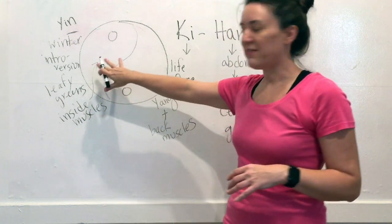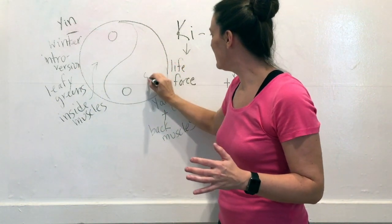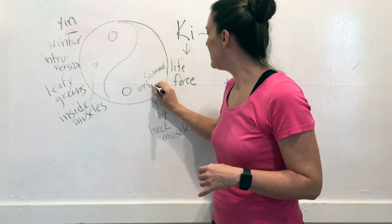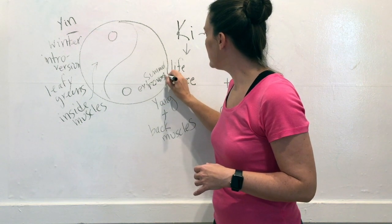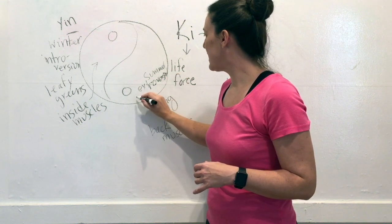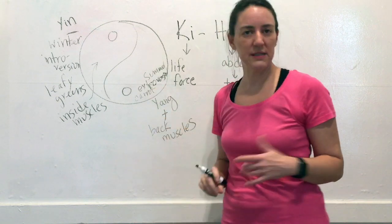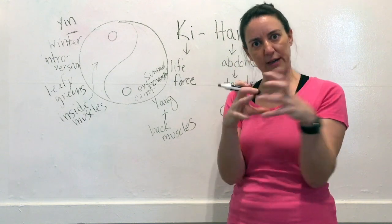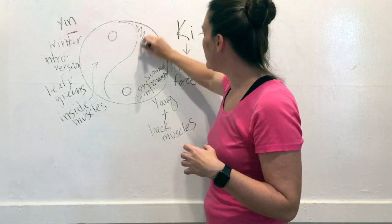The other side of the equation would be like, from winter, summer. Summer is yang. Extroversion is yang. The carrot, potatoes, chickens. They're very yang, very compact.